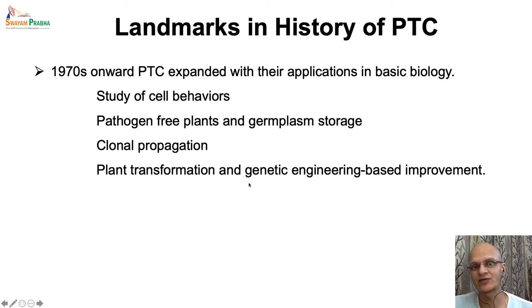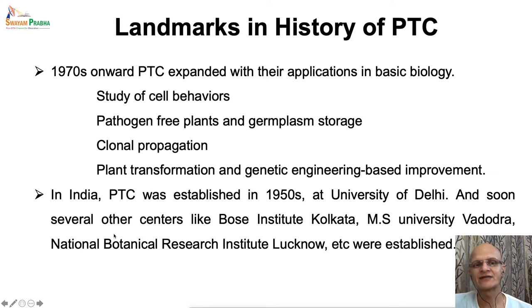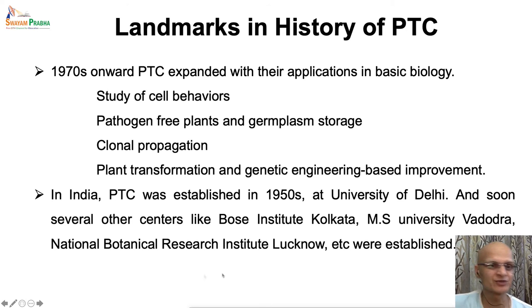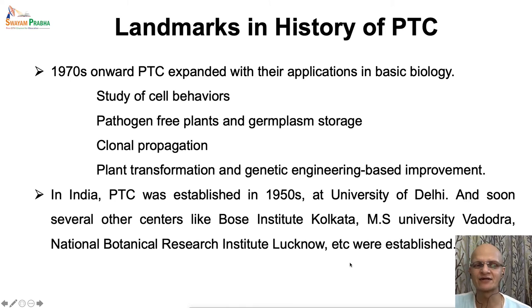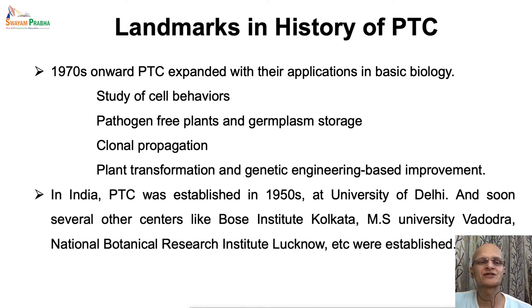This fact developed the hypothesis that Agrobacterium could be used to transfer DNA of our own interest into the plant genome — meaning foreign DNA could be delivered to the plant genome. By early 1980s, transgenic plants were developed. This technology opened up a totally new era of plant tissue culture applications for crop improvement, because for any genetic engineering-based or plant transformation-based crop improvement, the availability of a regeneration protocol was a prerequisite. In India, plant tissue culture was established in the 1950s at the University of Delhi, and soon after, several centers started working with plant tissue cultures, including Bose Institute Kolkata, MS University Baroda, and National Botanical Research Institute Lucknow. Later in the 1980s, the Department of Biotechnology was established, with one of its main focuses being plant tissue culture and its applications in crop improvement and agricultural biotechnology.